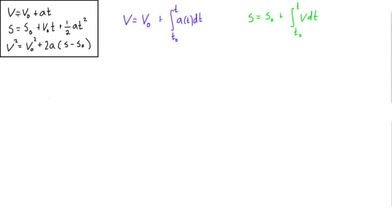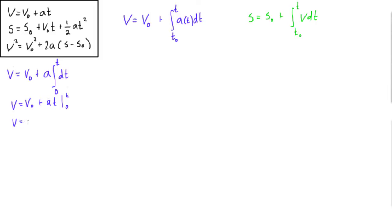To derive the first kinematic equation, we'll use the blue equation and write V equals V₀ plus the integral, choosing T₀ equal to 0 to make our lives easier. Since acceleration is constant, we can move it outside the integral and we're just left with dt. The integral of dt is just T, so we have V equals V₀ plus aT evaluated from 0 to T. Substituting in, this gives V equals V₀ plus a times (T minus 0), which gives us V equals V₀ plus aT. That's the first kinematic equation.